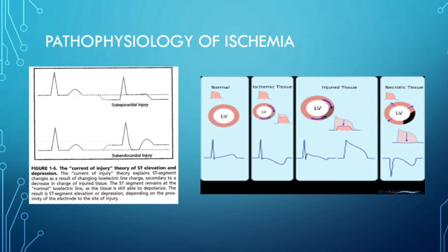In healthy cells, repolarization occurs at the same spot as depolarization. For ischemic cells, the opposite is true — repolarization will occur at the opposite site from where depolarization occurred. That's enough pathophysiology for today; let's get into the main part of the lecture.